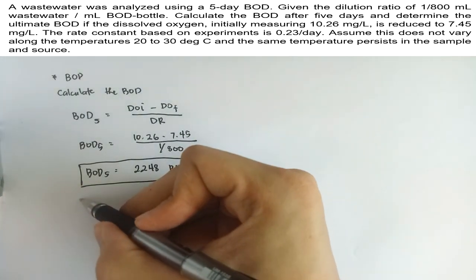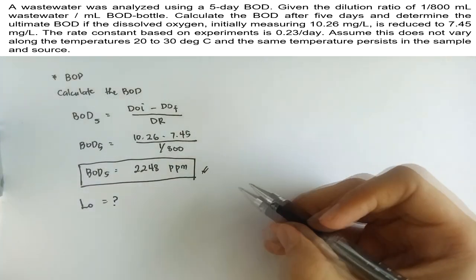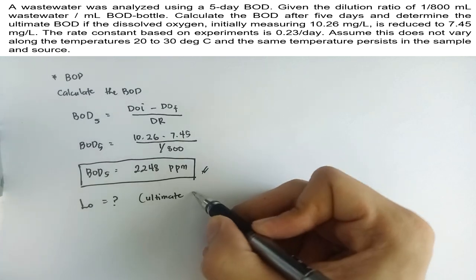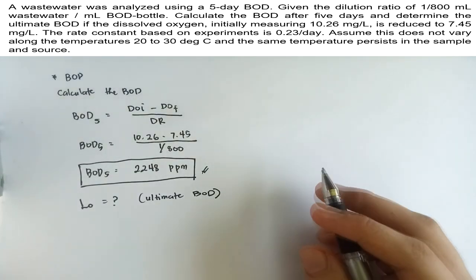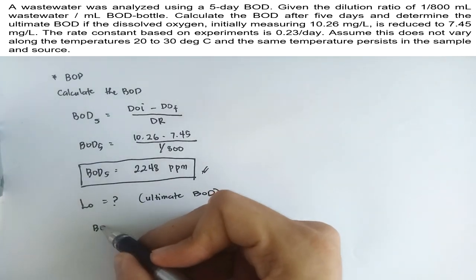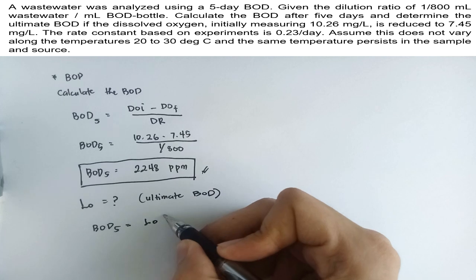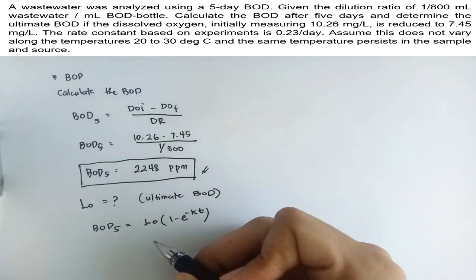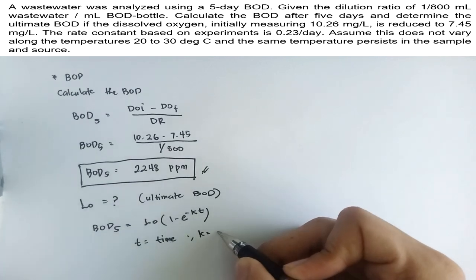Now, we solve for the ultimate BOD. The total amount of oxygen consumed when the biological reaction is allowed to proceed to completion is called the ultimate BOD. Usually, it is represented by L sub 0. In formula, we have the 5-day BOD equal to the ultimate BOD times 1 minus e raised to negative kT, where T is the time in days and k is a rate constant.